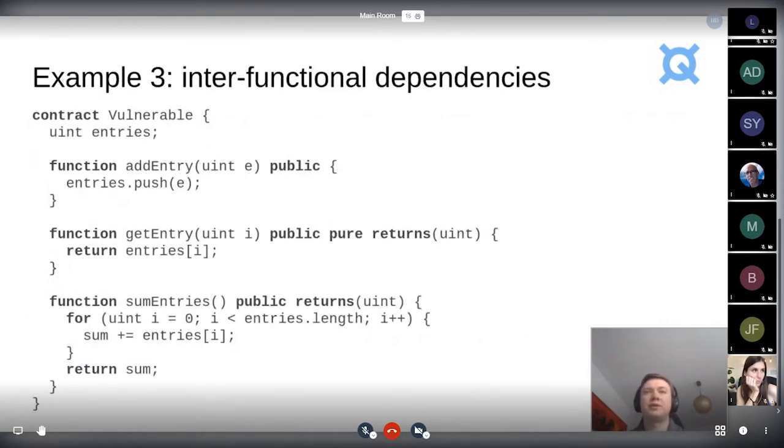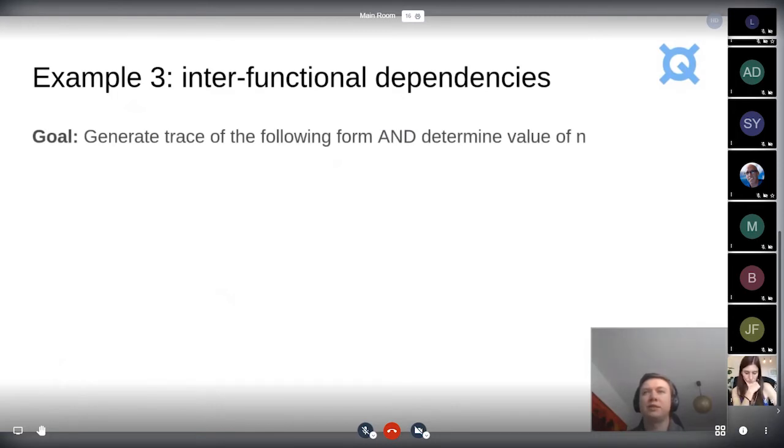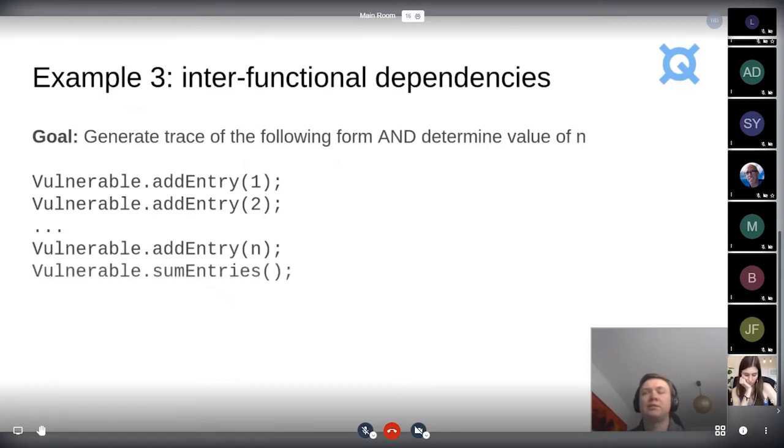Here's another example where there's a small contract that is vulnerable. It has several integer entries in it, and it has several functions. The first function just adds an entry in the list. The second function gets the entry at a certain location, and the third function sums up the list of entries, basically returning the sum. So here you can see that the goal is to find a trace of function calls like this, basically adding several entries up to N and summing them up. And the question is, what's the value of N such that when you call sum of entries, it leads to a block, an out of gas error?